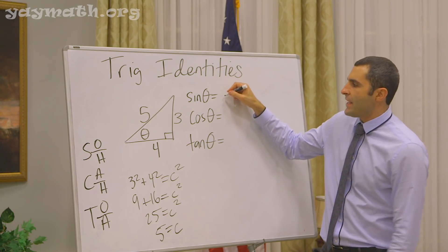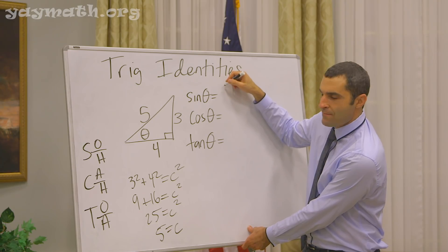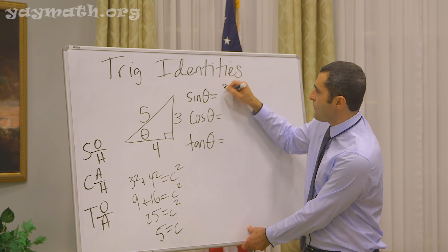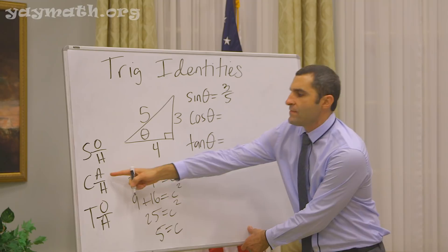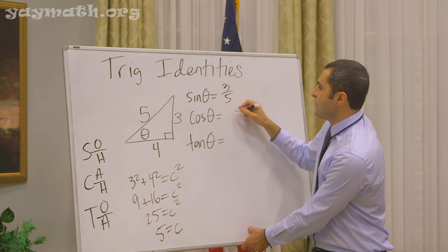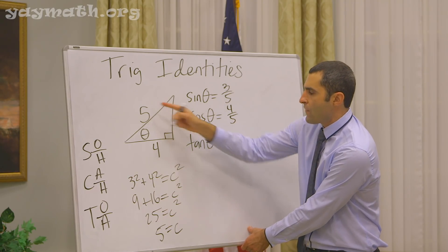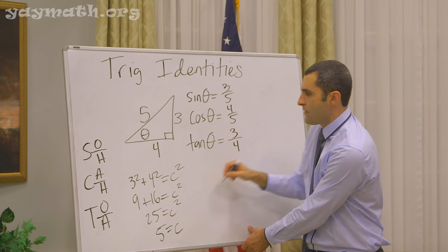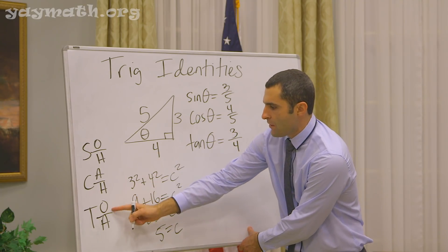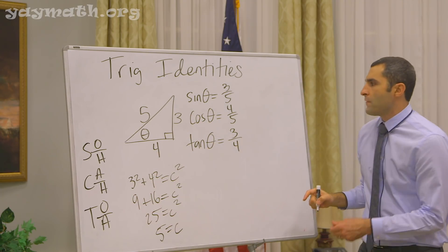Sine of the angle is opposite over hypotenuse, which makes 3 over 5. Cosine is adjacent over hypotenuse: 4 over 5. And tangent is opposite over adjacent: 3 over 4.